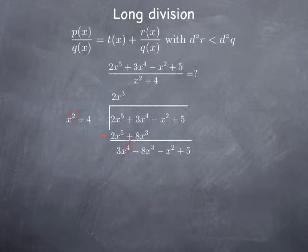We check the degrees: what we obtained is of degree 4 and the divisor is of degree 2. As long as we don't get something of degree less than the divisor, we keep going. Now 3x to the fourth minus 8x cubed minus x squared plus 5 plays the role of the new dividend. We look at its term of highest degree, divide 3x to the fourth by x squared, and get 3x squared.